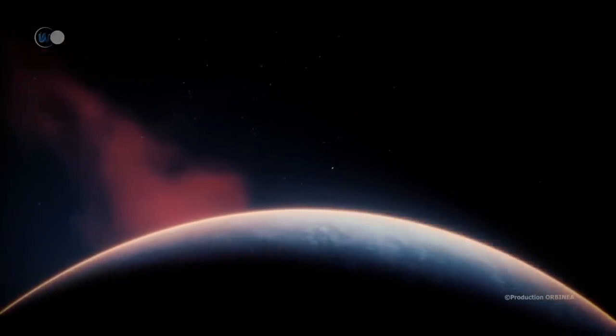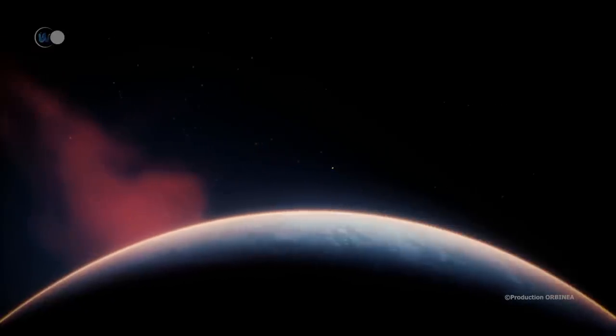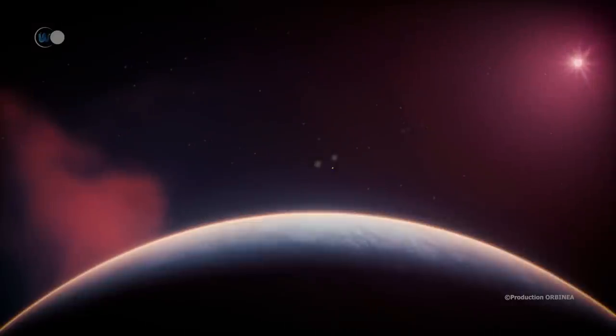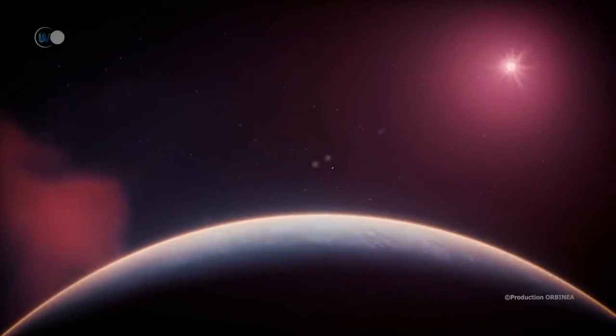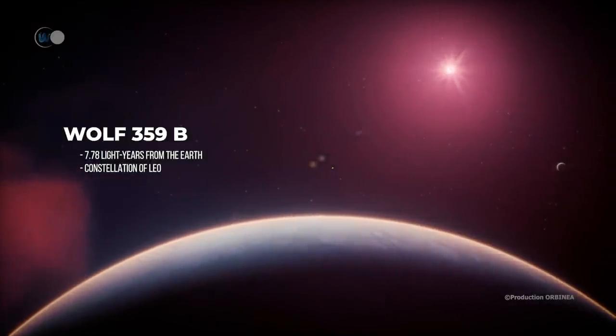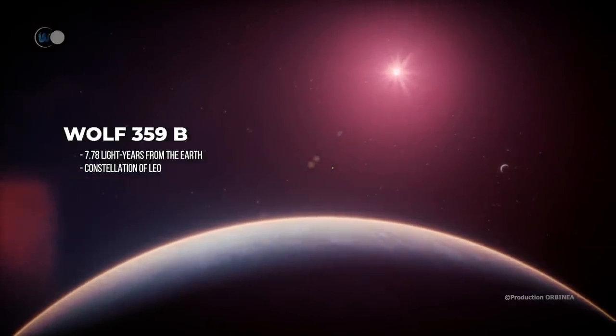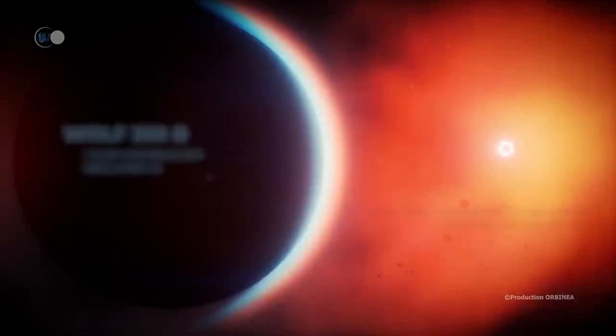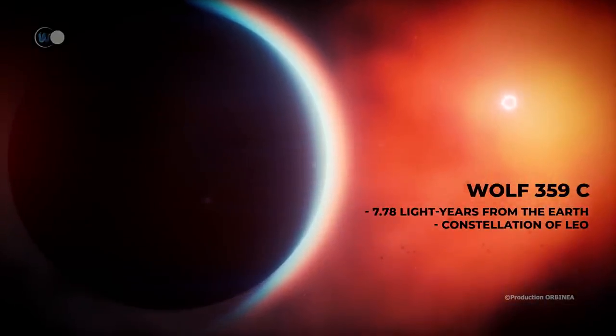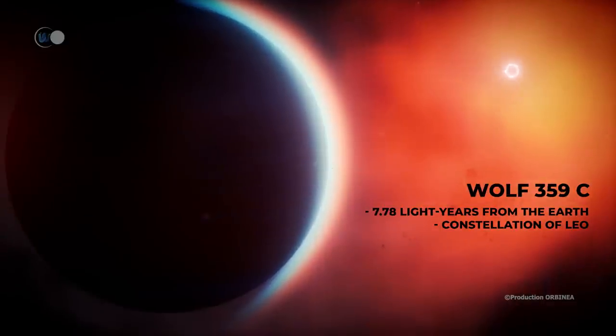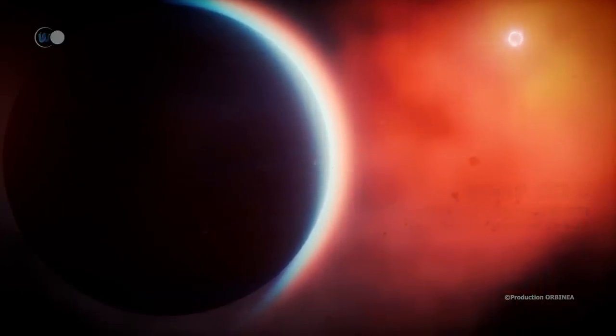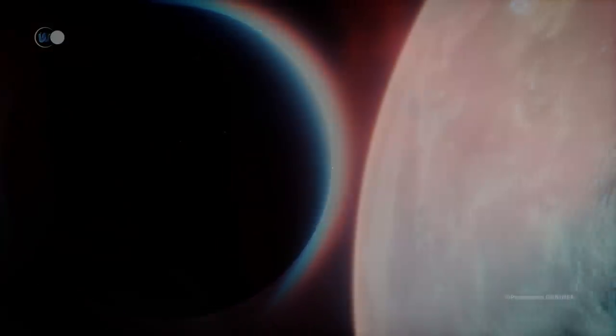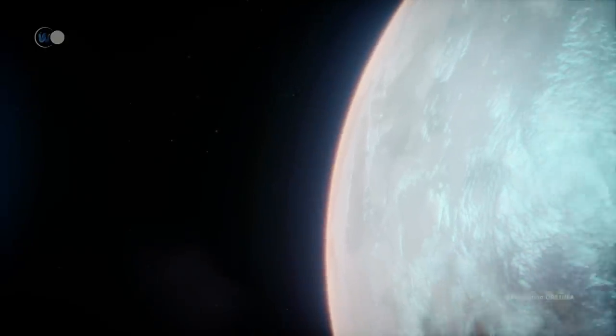As we have seen, Wolf 359 is not alone. It has two companions. Two planets orbit around it. The first, Wolf 359b, is 276 million kilometers, or 170 million miles away. And the second, Wolf 359c, is close to 2.7 million kilometers, or 1.7 million miles.